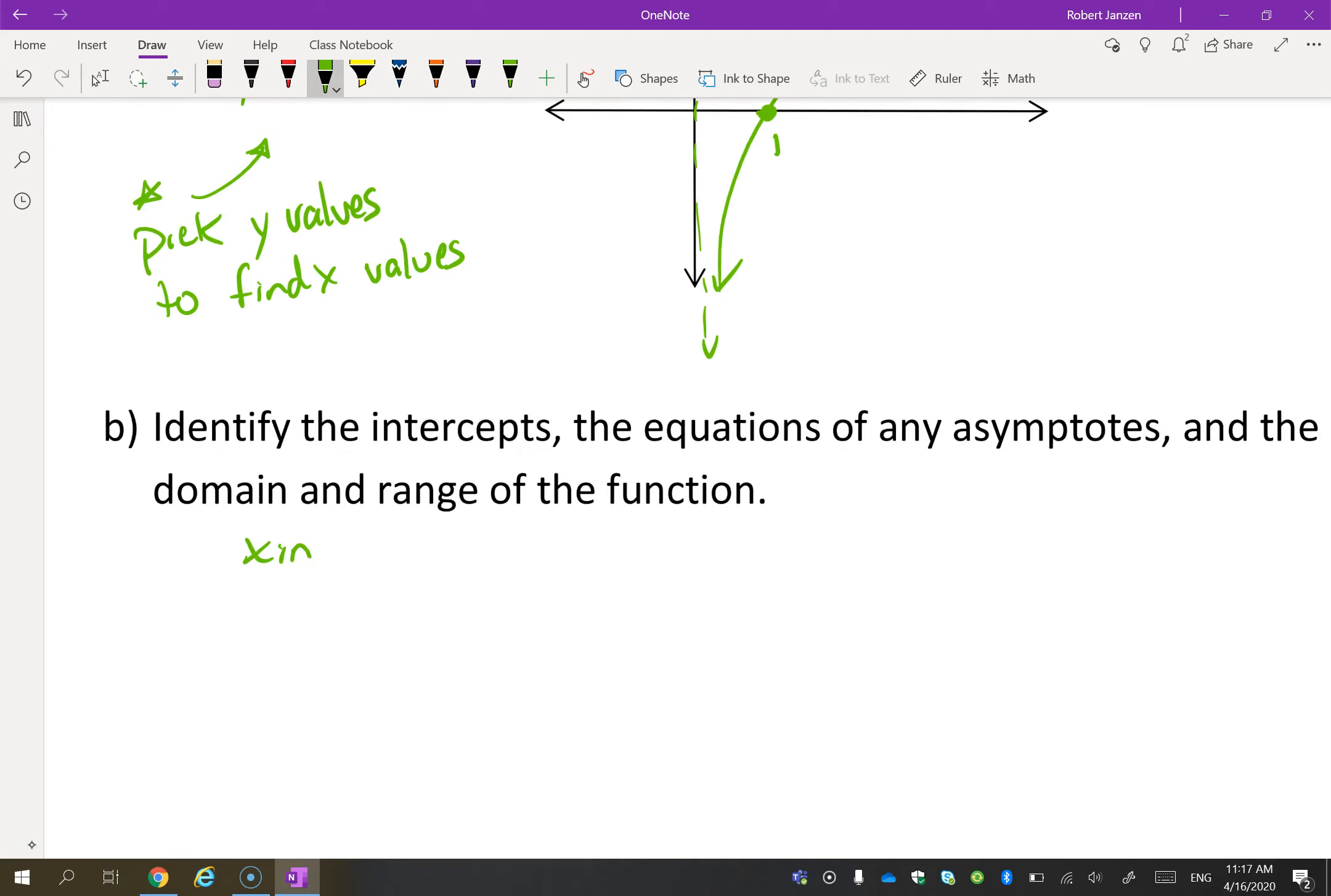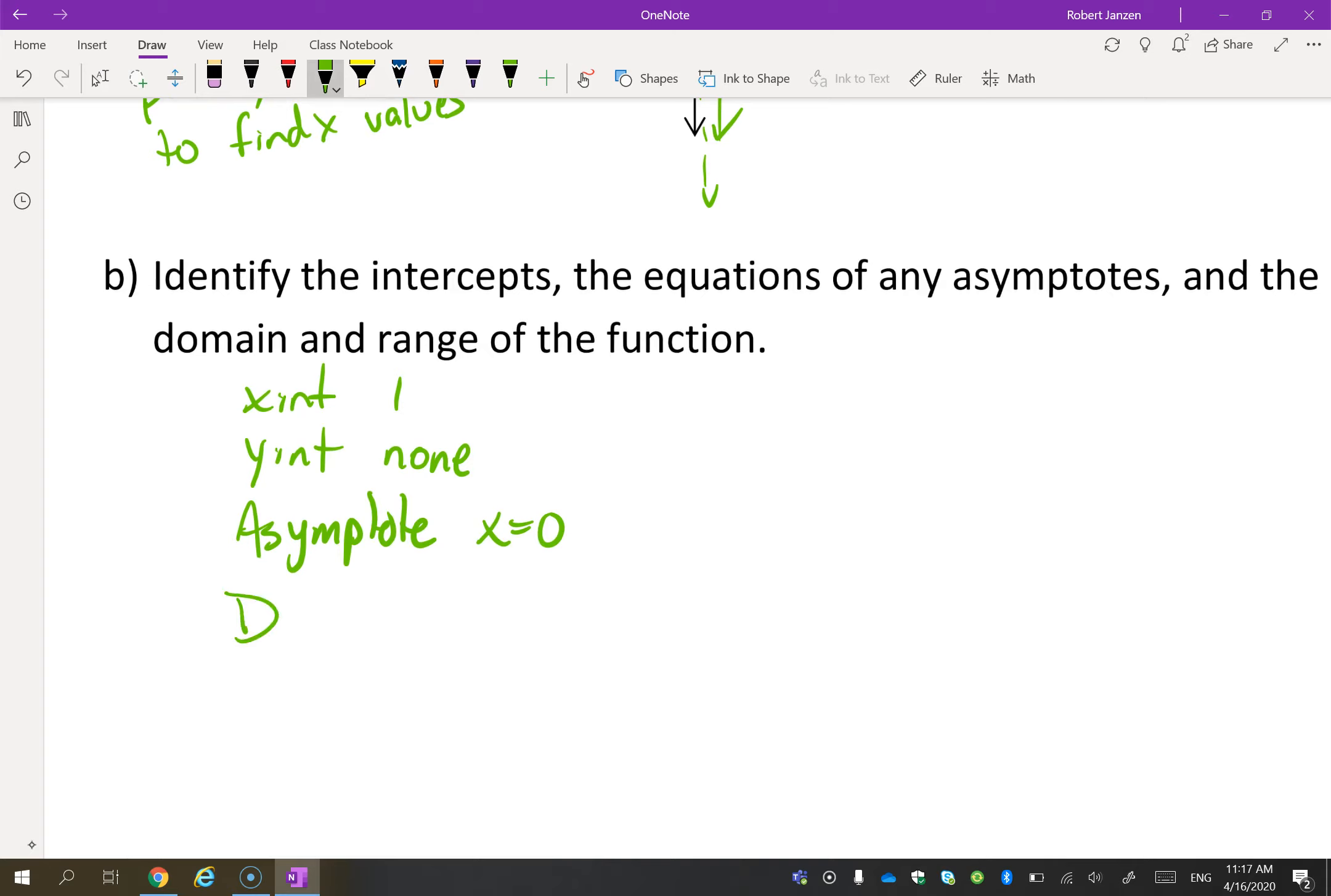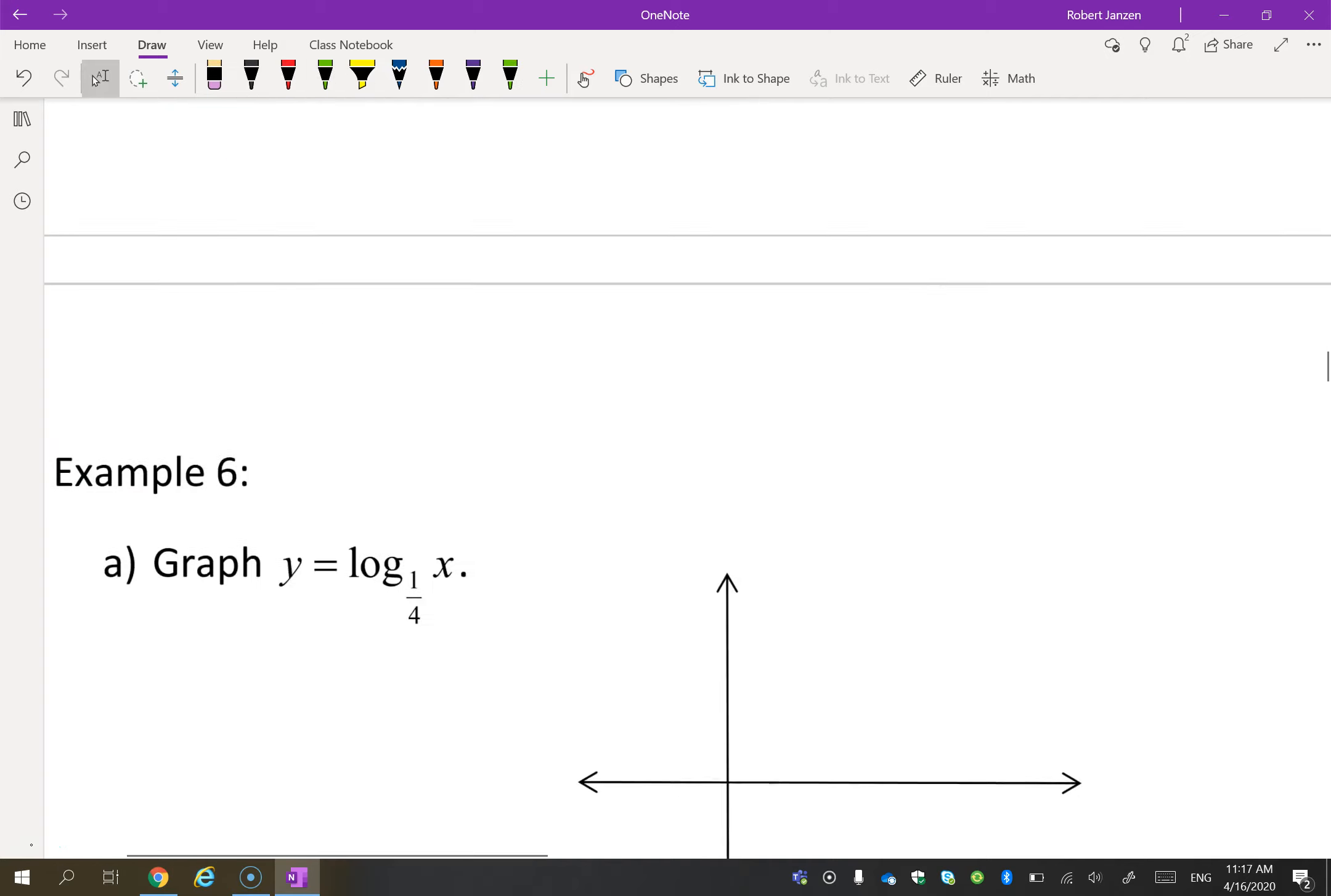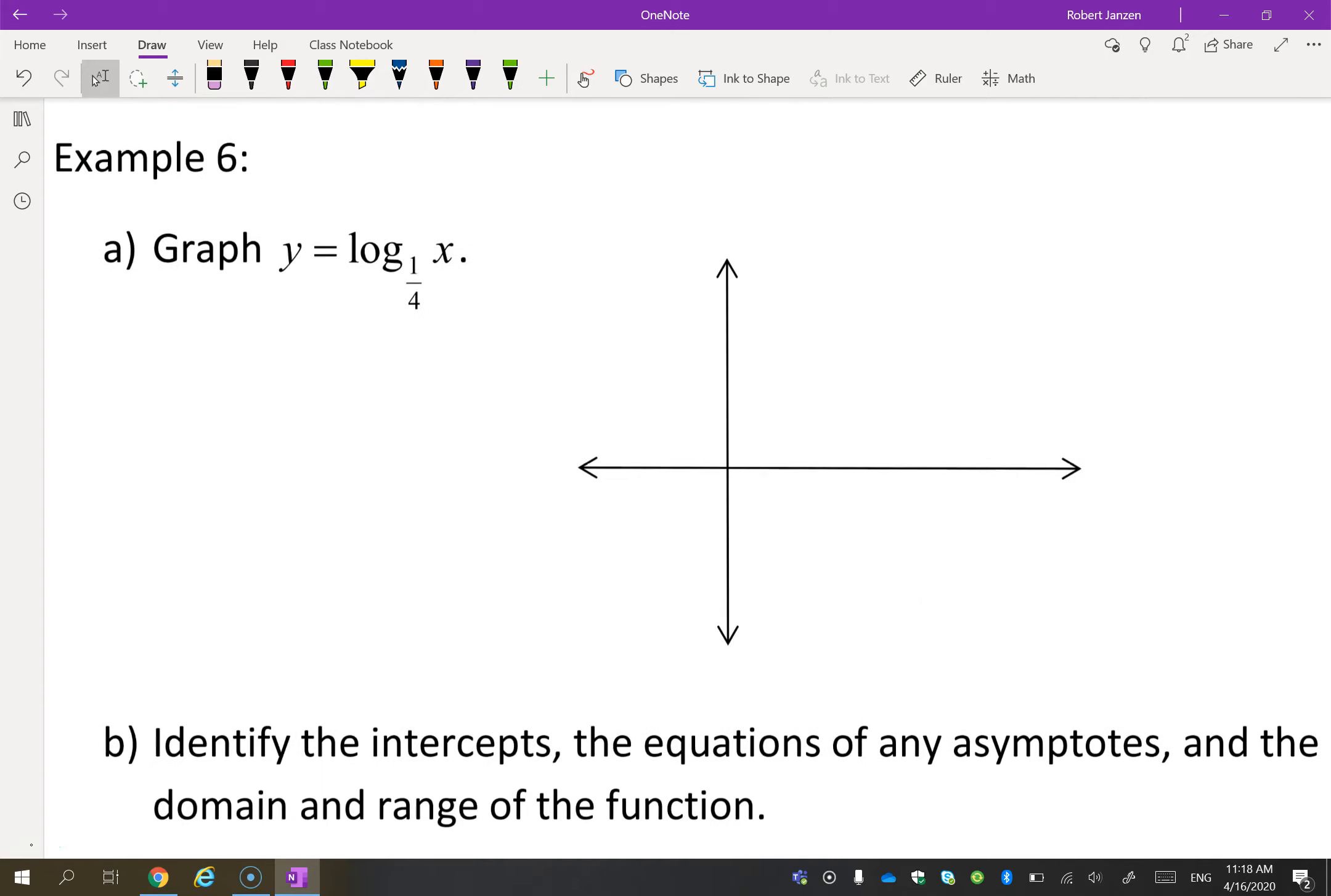Intercepts. x-intercept is 1. y-intercept, there are none. There is an equation of an asymptote of x equals 0. And you'll see the domain is exactly what the range was in an exponential function. And the range is exactly what the domain was in an exponential function. So let's graph a few more of these. I want you to get good at these. I don't really think you need a table of values.